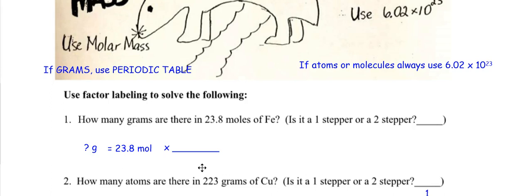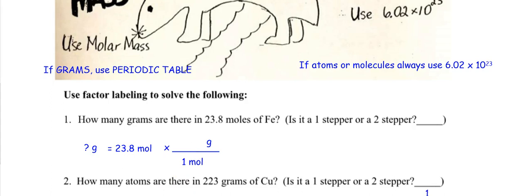If the word mole is in the problem, you only need one conversion factor. What unit goes in the denominator? Mole. What number goes with mole? One mole — always one mole. What unit are you looking for? Grams. Use your periodic table. Go ahead and look up iron. I got 55.85. I wrote down the word mole — there's a one. I wrote down the G — use the periodic table. It's a one-stepper.